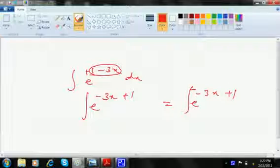I'm sorry. So this is e to the power minus 3x plus 1 divided by minus 3 plus c.